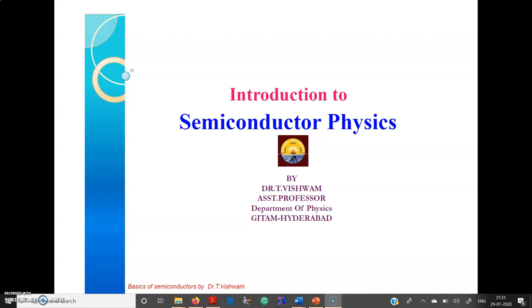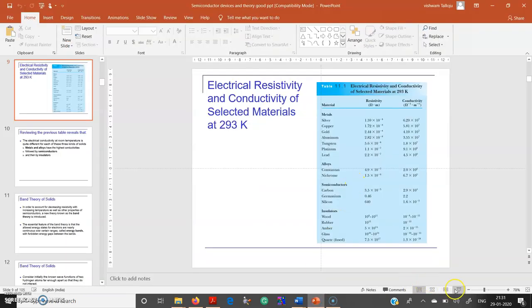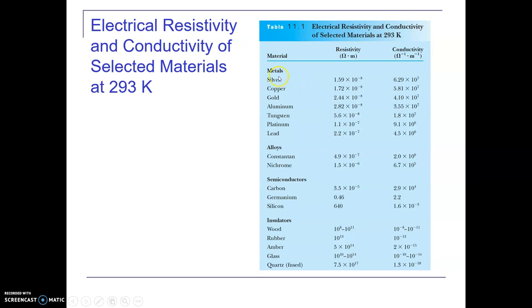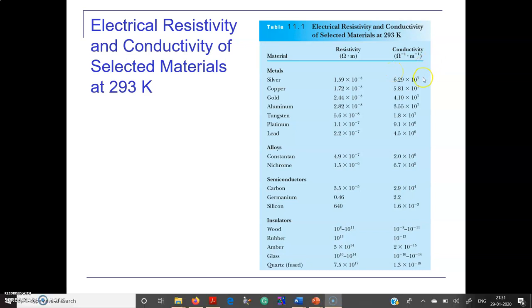If you look at the resistivity of materials: metals have resistivity in the order of 10 to the power of minus 8, with conductivity in the order of 10 to the power of 7. Alloys are in the order of 10 to the power of minus 7, Nichrome is 10 to the power of minus 6. Insulators have resistivity in the order of 10 to the power of 11 to 10 to the power of 14. For semiconductors, carbon has resistivity of order 10 to the power of minus 5, germanium is 0.46, and silicon is 640.